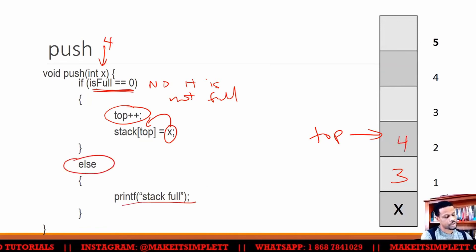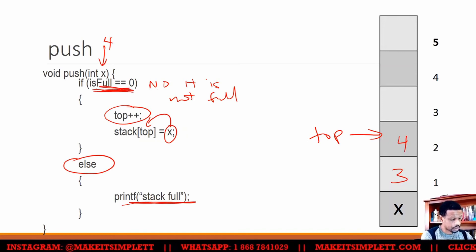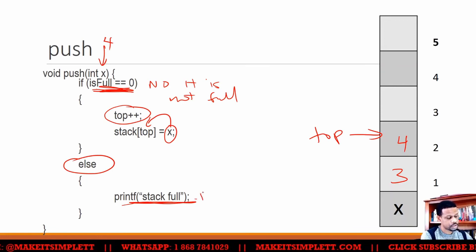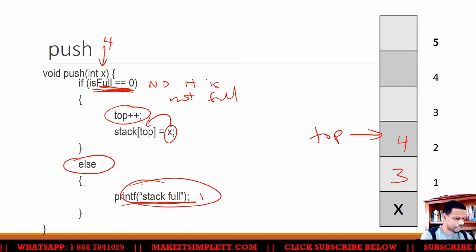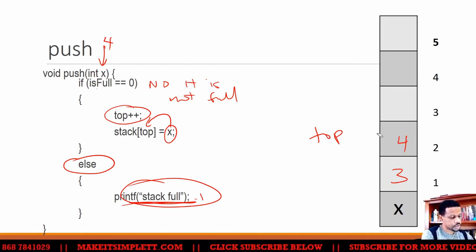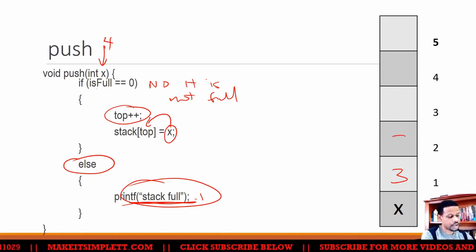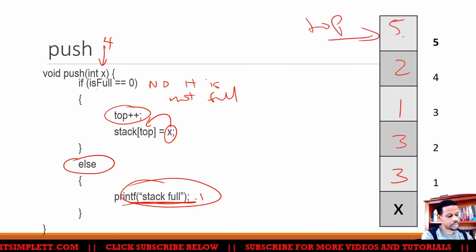Else, you print stack is full because if is full doesn't return a zero, but returns a one, that means it is full. So print stack is full and therefore it won't try to push anything because that obviously means if is full doesn't return zero, that means it returned one and there are numbers all the way up to here. So top is up there, so therefore you can't actually push something on top there because it's already at its maximum value.